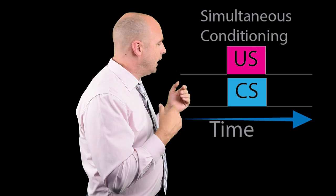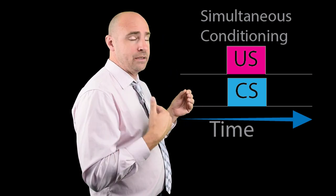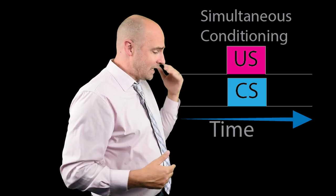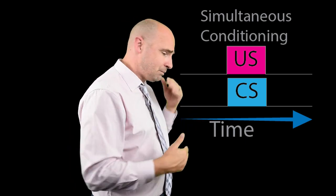We can get into Wagner and all that fun stuff — Rescorla-Wagner. One or both of those folks talked about predictability. The CS has got to predict the US. If the CS doesn't predict the US, you're not going to get any conditioning.